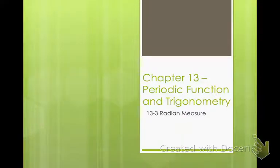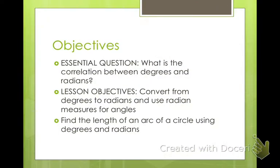Continuing our chapter on periodic function and trigonometry, we're going to talk about radian measure, what radian measure means, and the relation between radian measure and degrees. Our central question is: what's the correlation between degrees and radians? Our objectives are to convert from degrees to radians and use radian measures for angles, and find the length of an arc of a circle using degrees and radians.